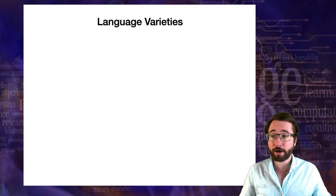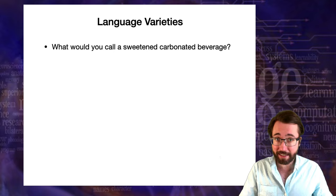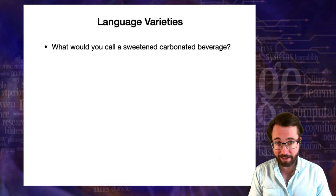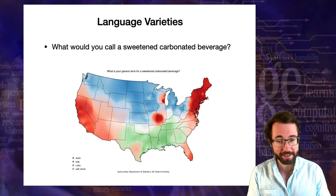We can begin studying variation of language across a community by seeing if we can detect variation in English within the United States. We'll start by asking: what would you call a sweetened carbonated beverage? Would you call it a soda? Would you call it a pop? Would you call it a Coke? Think about what you would call this thing.